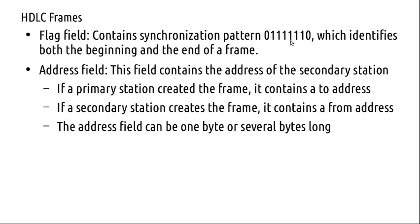The flag sequence identifies both the beginning and end of the frame. The address field always contains a secondary station address — not the primary station address. If the primary station created the frame, then it contains the destination (to) address; if from the secondary, it contains the source (from) address. Depending on your network requirement, you will have one byte or several bytes for the address field. We will see more practical cases in Ethernet and wireless LAN later.